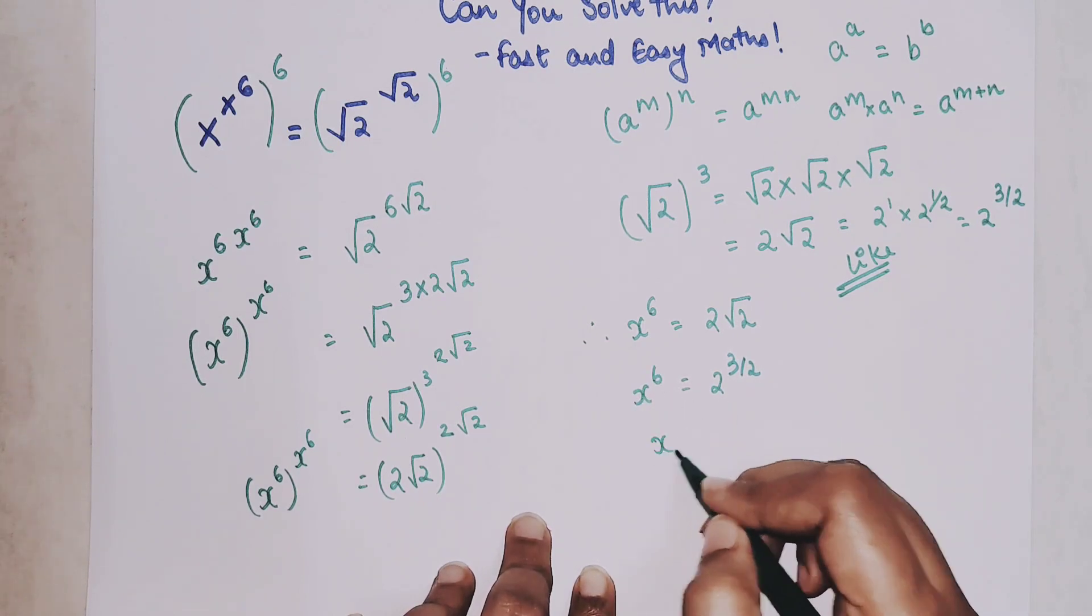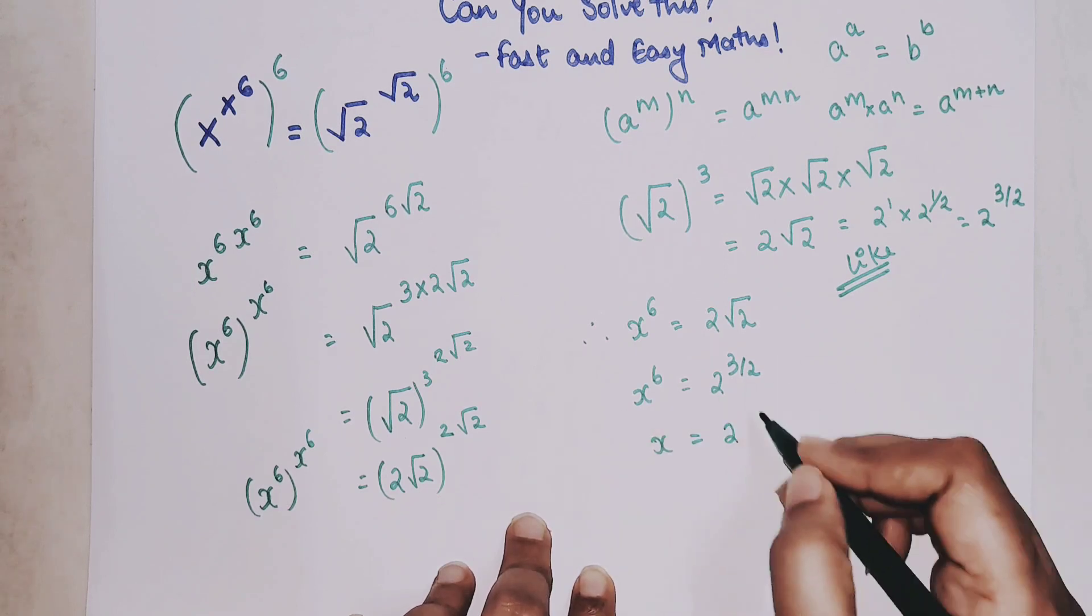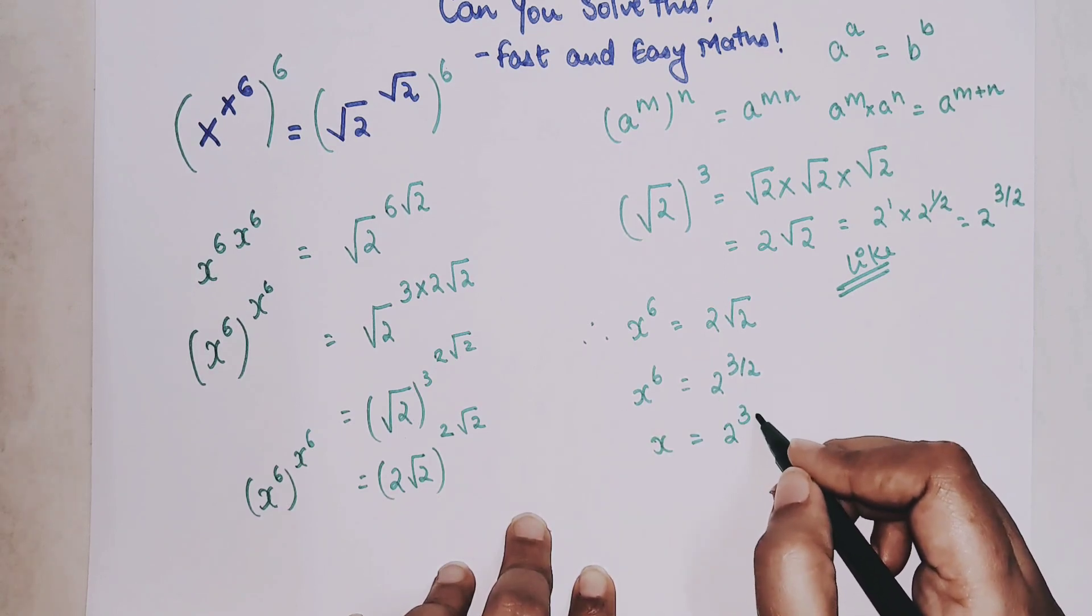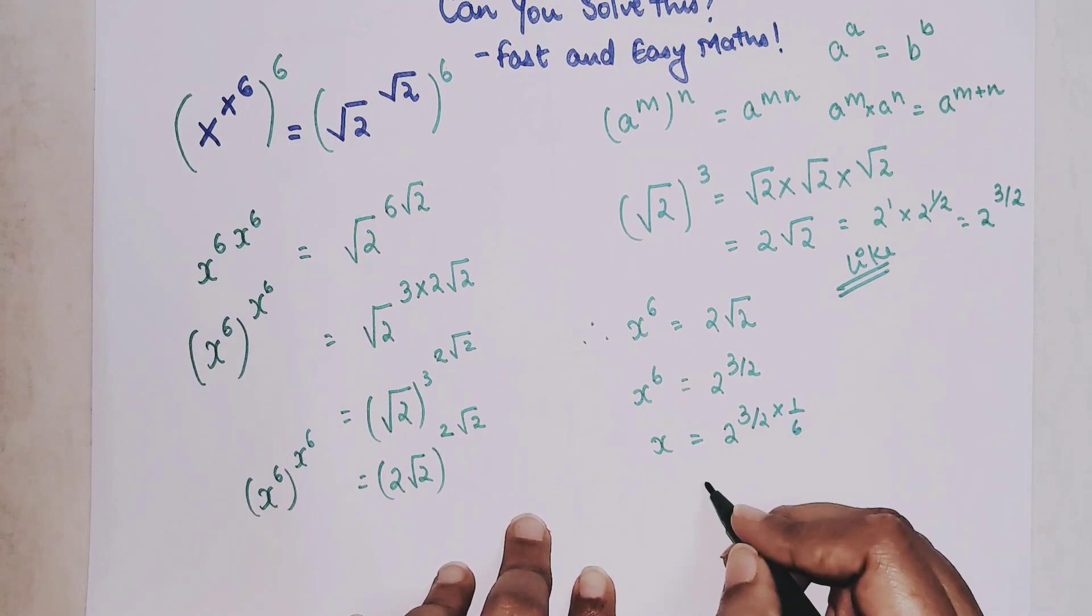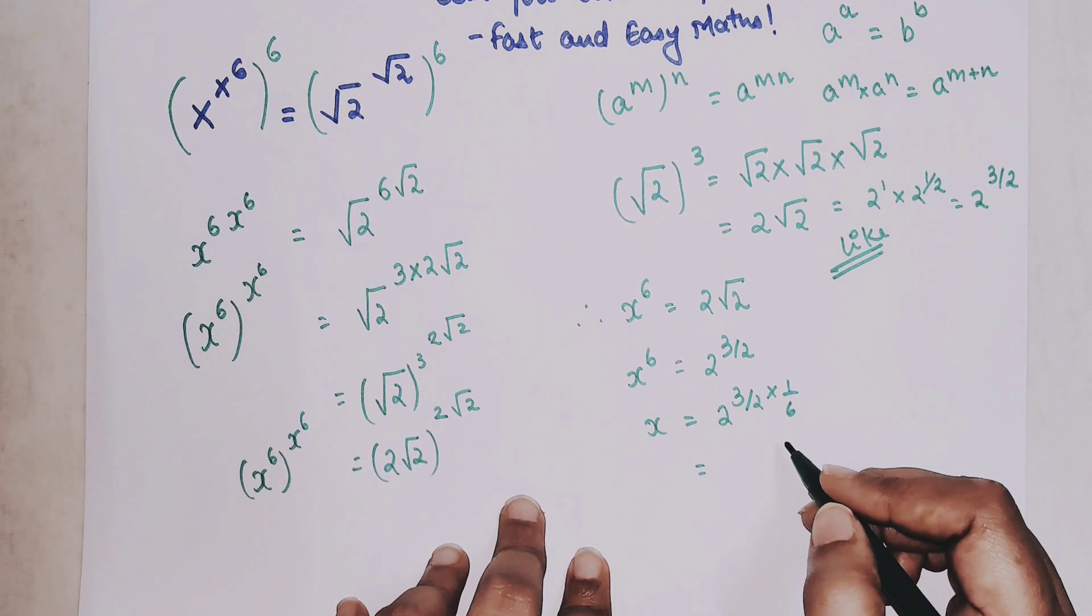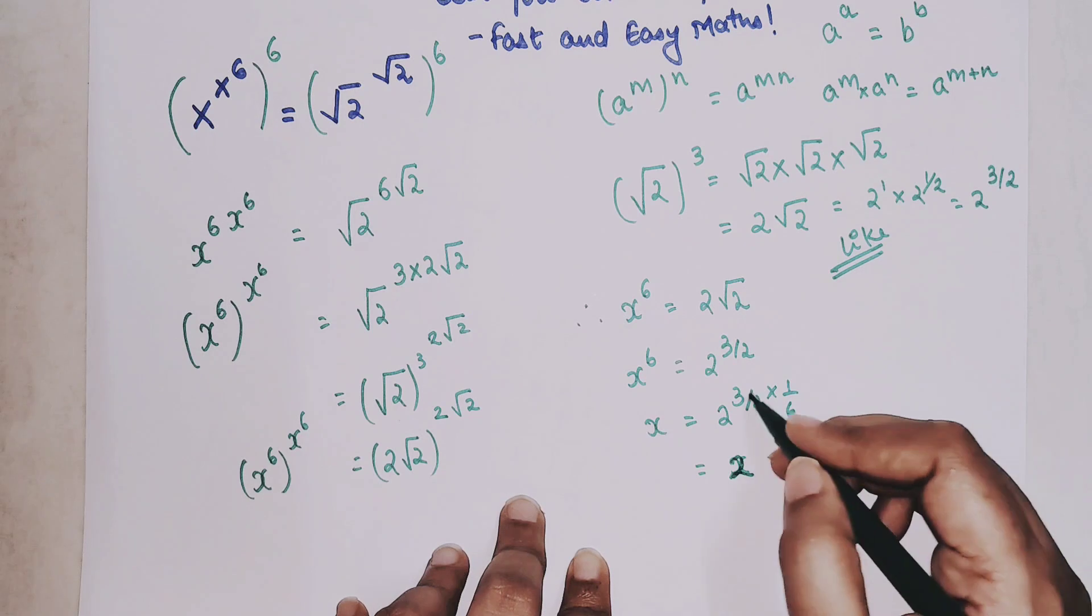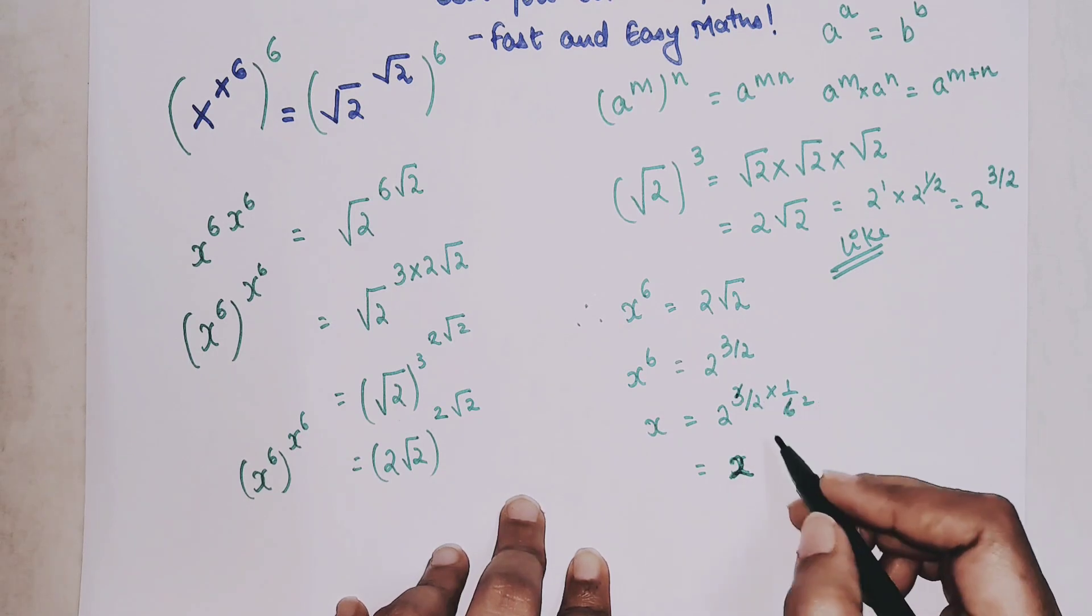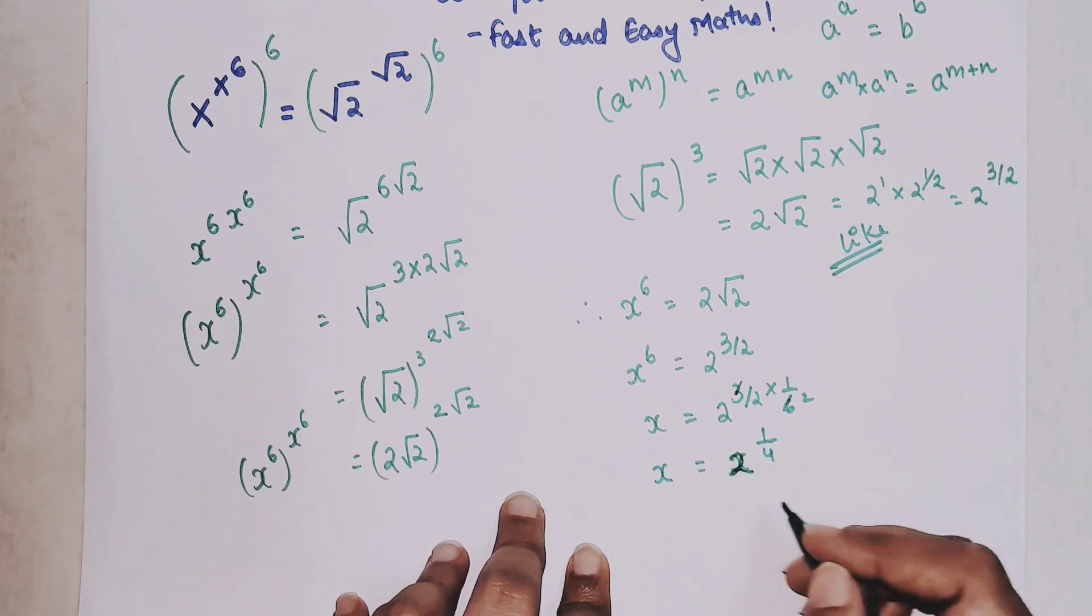So this is 2 raise to 3 by 2 and this is still equal to x raised to 6. Now taking the 6th root on both the sides we get 2 raise to 3 upon 2 into 1 by 6. So this comes out to be 2 raise to 3, 1s are 3, 2s are 4. So 2 raise to 1 upon 4. This is the value of x or you can also say x is nothing but 4th root of 2.